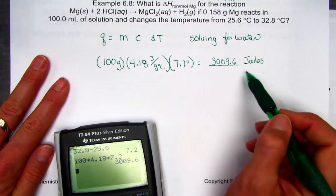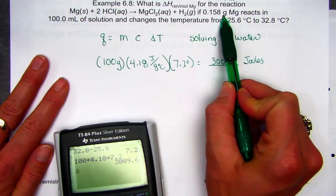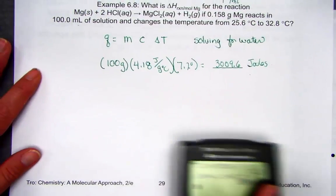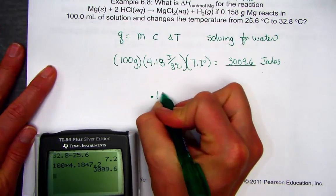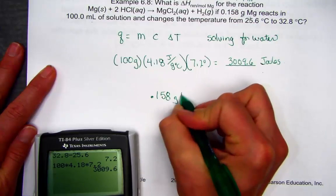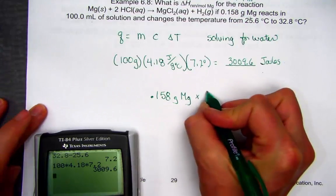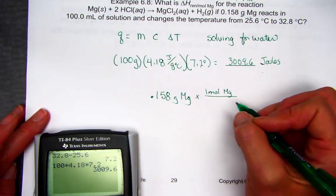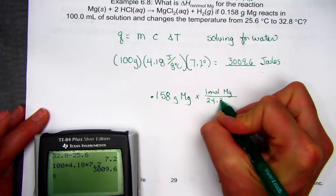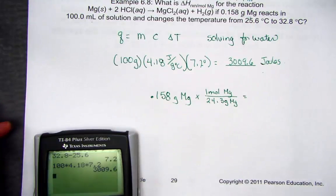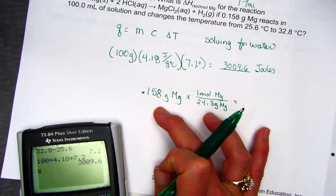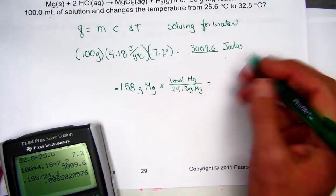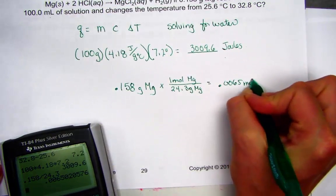That 3009.6 joules represents the heat change when 0.158 grams of magnesium reacted. We're asked to report this in moles of magnesium. Converting: 0.158 grams divided by the molar mass of magnesium (24.3 grams per mole) gives 0.0065 moles of magnesium. Now we have joules of heat and moles of magnesium — we're being asked for heat of reaction in joules per mole.